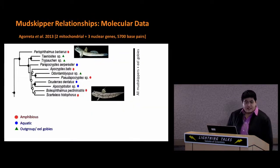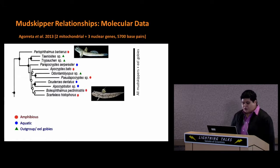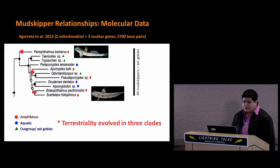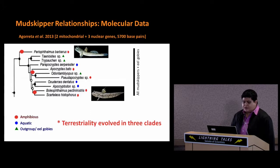Just last year, Agareta et al., using molecular data, came up with a phylogeny of the gobies. They showed that the gobies are actually paraphyletic and that eel gobies are included within this group. Based on their data, terrestriality is seen to have evolved in three distinct clades.